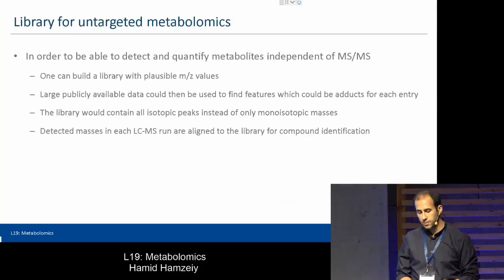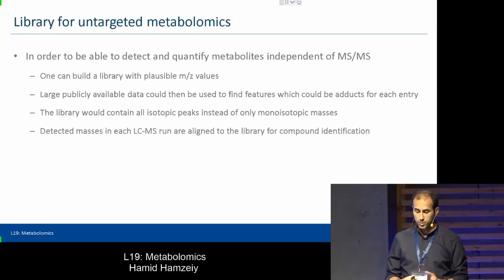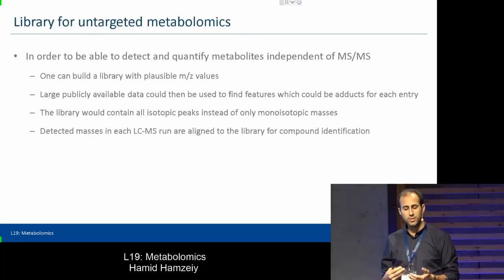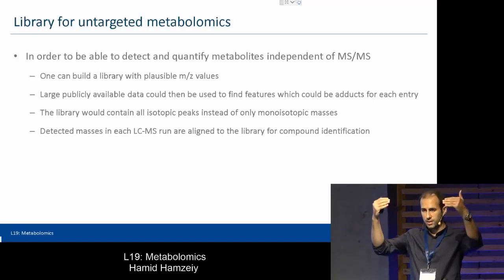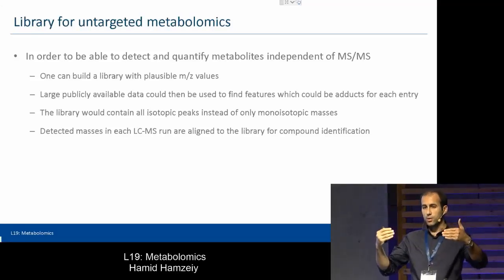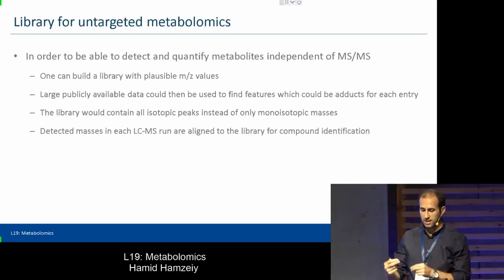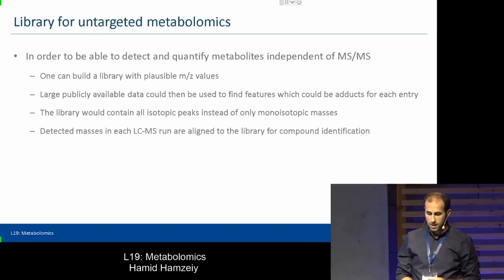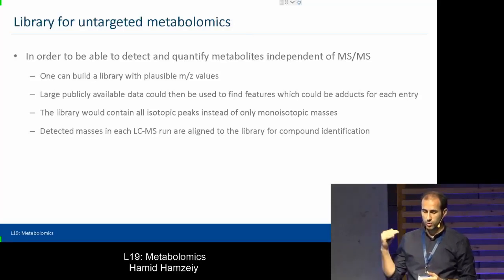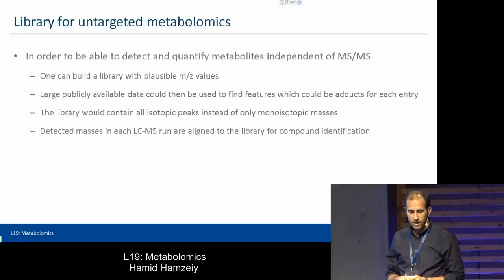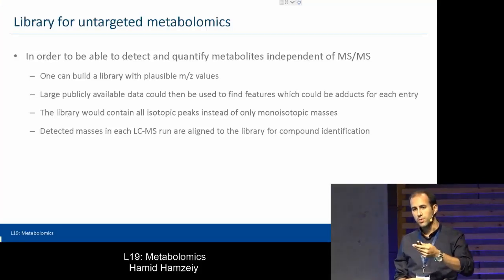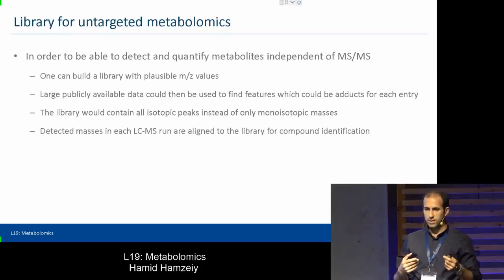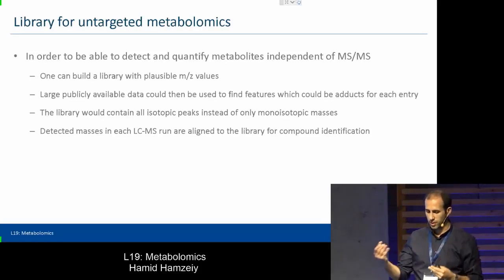The library is built around plausible Mz values. We take publicly available data from different databases, find features, and add them into our library. The library is basically a list of compounds and their masses, their adducts, and every kind of feature you can see in these datasets. These are not monoisotopic masses but all the isotopic peaks. Every new run that we want to detect compounds in will be aligned to this library with a nice fit, allowing us to say whether compound A or compound B is in our run or not.